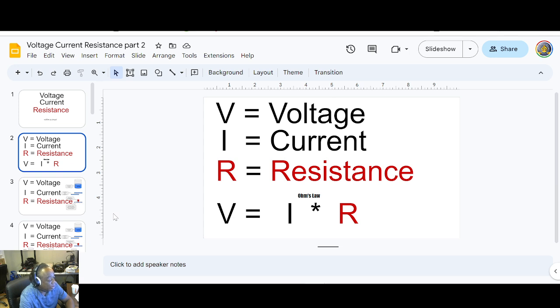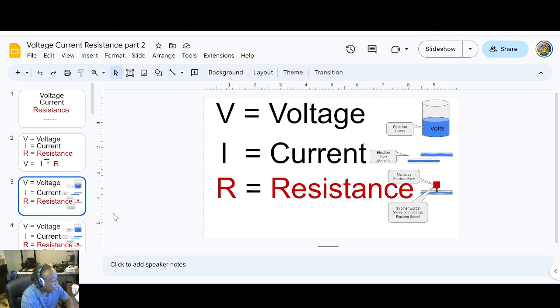Ohm said that voltage is found by multiplying the current with the resistance. Now let's talk about what, get an idea of what current, voltage, and resistance are.